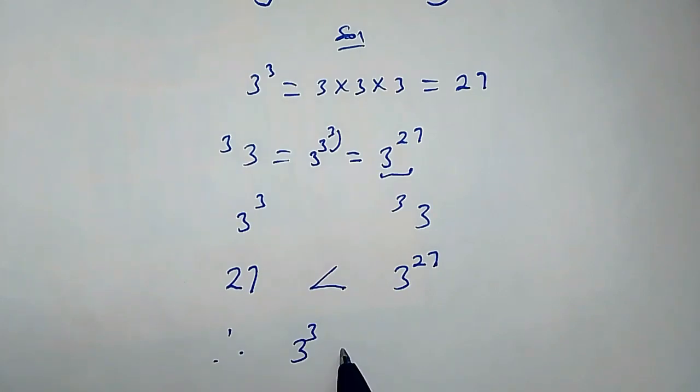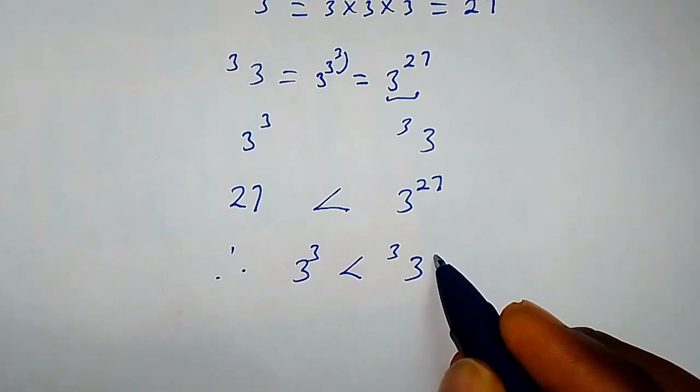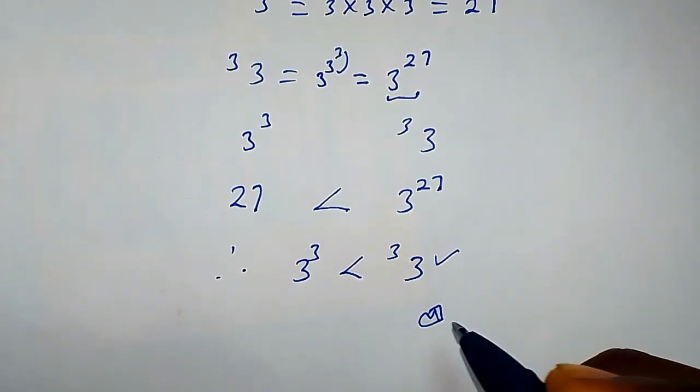Therefore, 3 to the power of 3 is less than 3 to the super power of 3. So this is the larger number. That's it, thanks for watching.